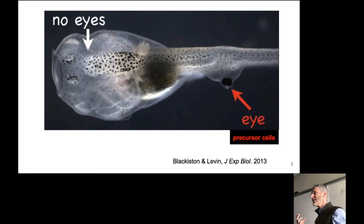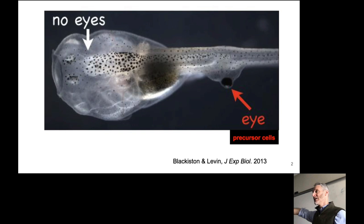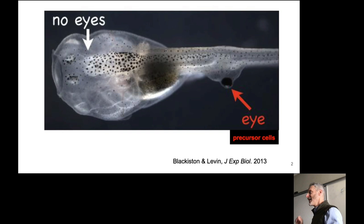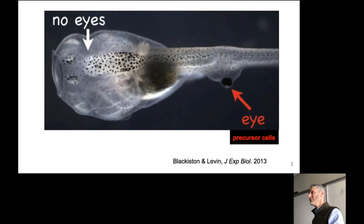These eye precursor cells would normally appear at the front of the tadpole. Instead, the biologists performed a surgical intervention and introduced them into the tail — a major change in the developmental trajectory of the organism. Not only did this not kill the frog, but as the tadpole grew, these cells developed into a normal frog eye in its tail. The eye sent out neural processes that attached to the spinal cord, establishing a connection.